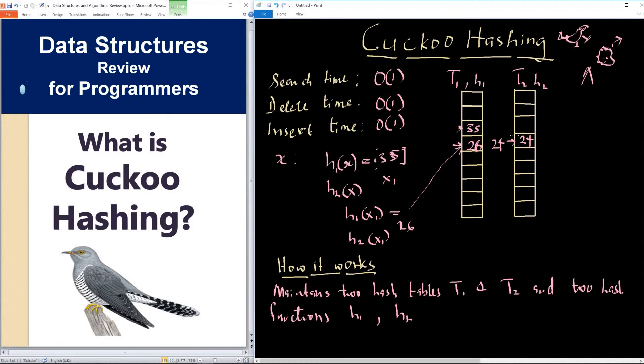Now, is it possible that when we try to insert an item in the first position and eject an item from there, and we try to insert into a second position, we also have an item there? We also eject that item onto another position in the first hash table, and the same thing repeats itself.